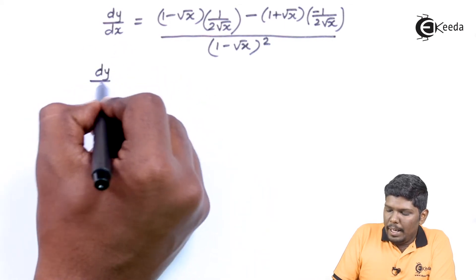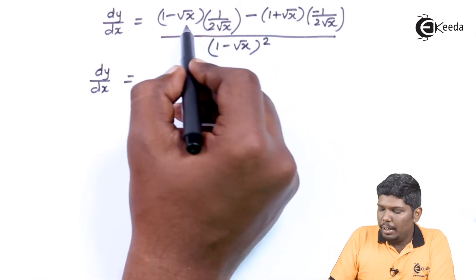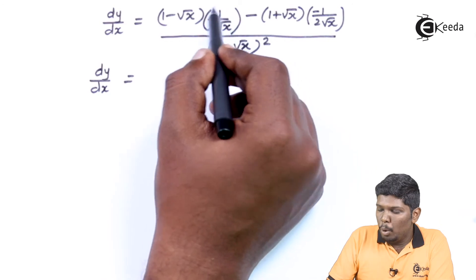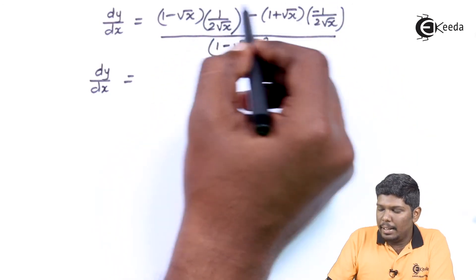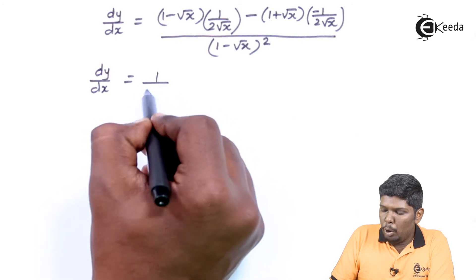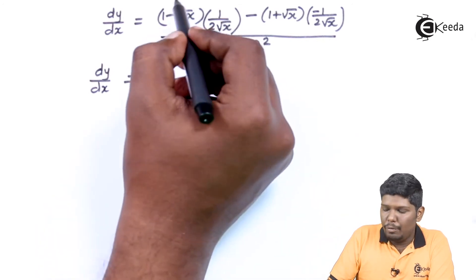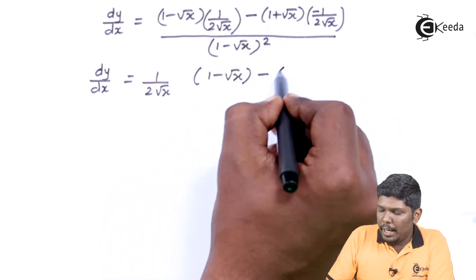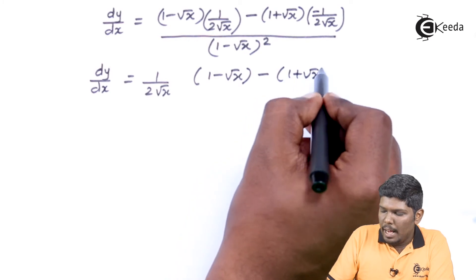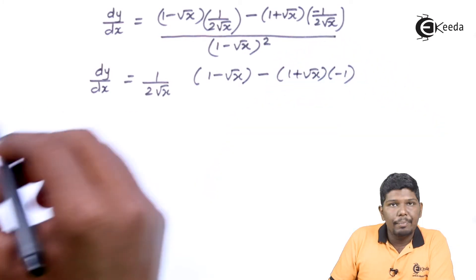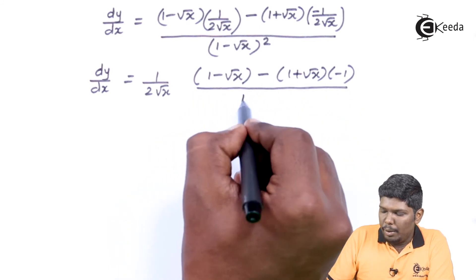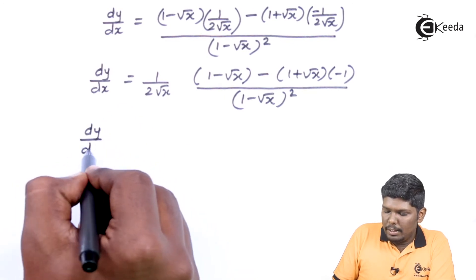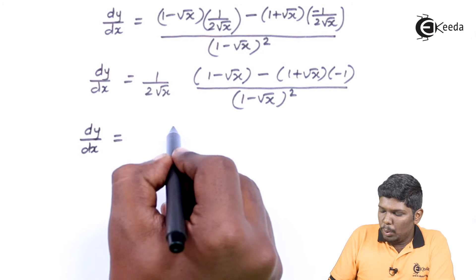In the numerator we have two terms, both containing 1/(2√x). Taking 1/(2√x) as common, the numerator becomes: from the first bracket (1 - √x) minus from the second bracket (1 + √x), noting the minus sign, all upon (1 - √x) squared.